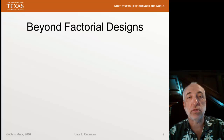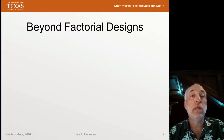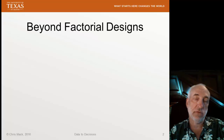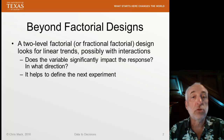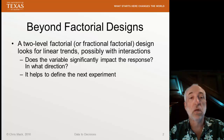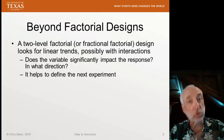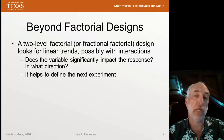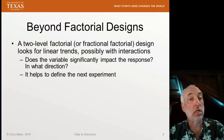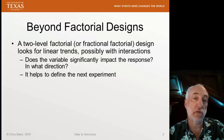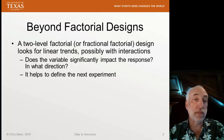In the last few lectures and explanations using R, we looked at factorial designs — full factorial designs, fractional factorial designs, and in particular, two-level factorials. We used these to screen variables and to spot linear trends. Depending on how fractional we get with our factorial design, we can also investigate interactions between variables. But they are limited to linear trends only.